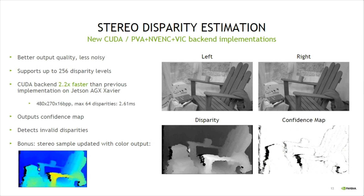This new implementation can also output a confidence map and detect invalid disparities, usually due to occlusions. There is also a new PVA-NVENC VIC backend, which uses these three accelerators together to estimate disparity with better quality, along with confidence map output and detection of invalid disparities, just like the new CUDA backend. It's only available on Jetson AGX Xavier devices.